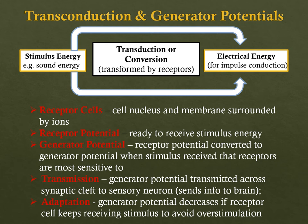To summarize: the decrease in the generator potential is called adaptation, which prevents over-stimulation, whereas habituation is the decrease in frequency of firing in a neuron.